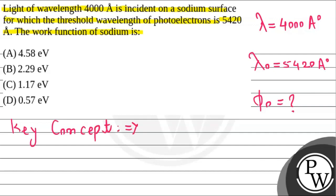Before that, let's talk about the key concept we're going to use here. We'll simply use the formula of work function in terms of threshold frequency, that is phi naught equals hc by lambda naught, where h is Planck constant and c is speed of light in vacuum.